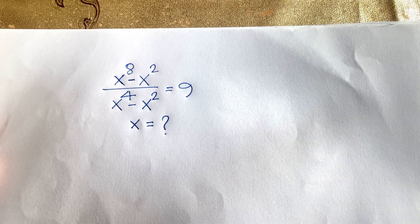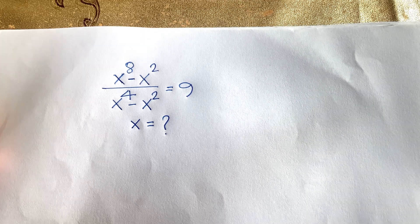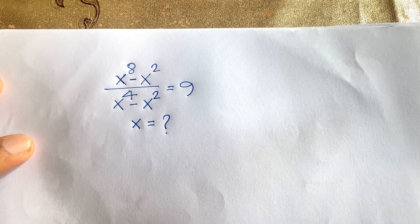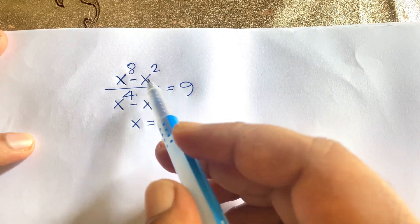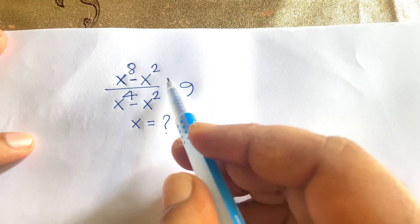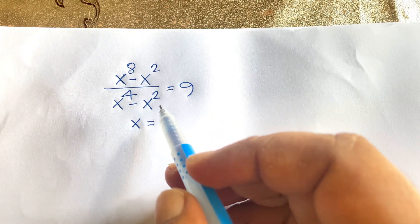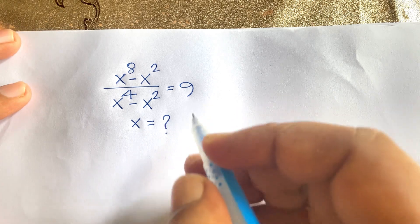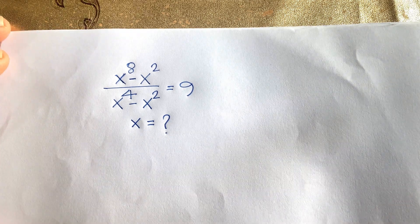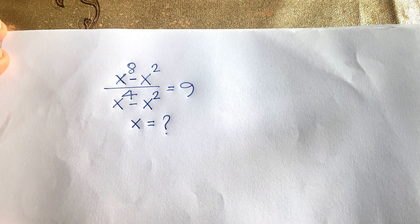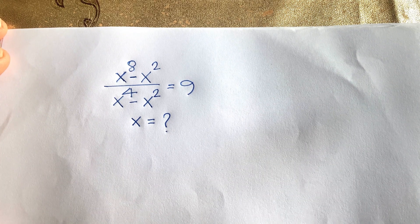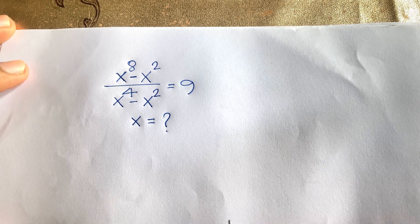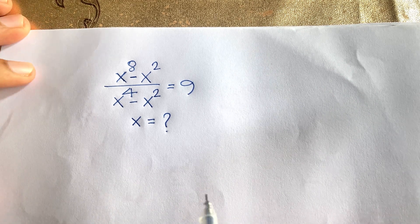Hello everyone. In this video we will solve this interesting Math Olympiad question. The question is: (x^8 - x^2) / (x^4 - x^2) = 9. We'll find out what is the value of x in this Math Olympiad question.